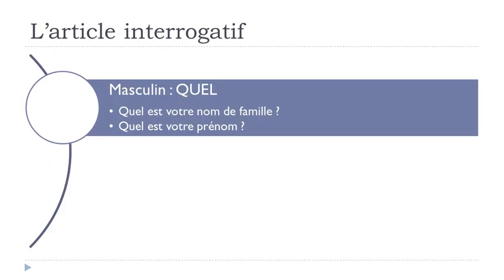L'article interrogatif — the masculine form is QUEL. QUEL means WHAT, so that's what you'll use when you want to ask a question with WHAT. Here's a good example: QUEL EST VOTRE NOM DE FAMILLE? VOTRE means YOUR — the polite form of YOUR. NOM DE FAMILLE means FAMILY NAME or LAST NAME.